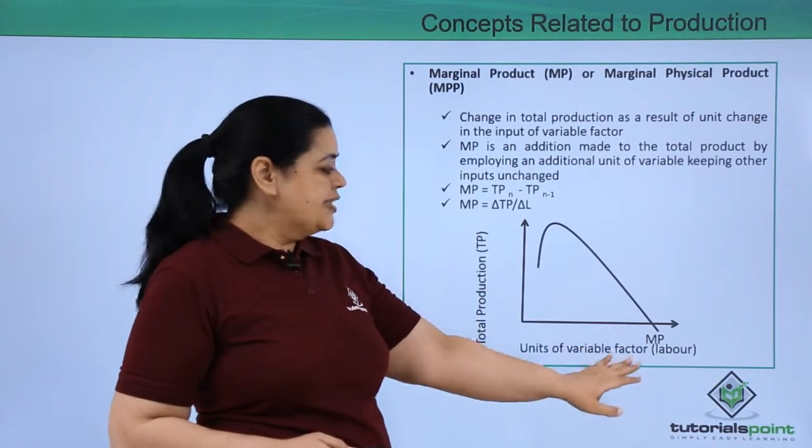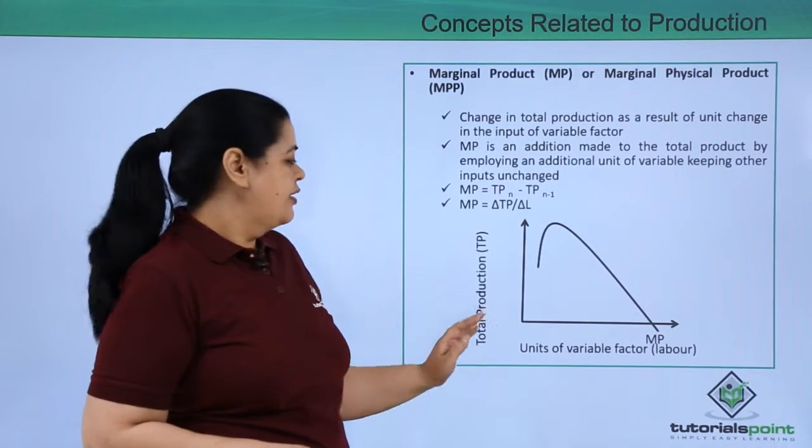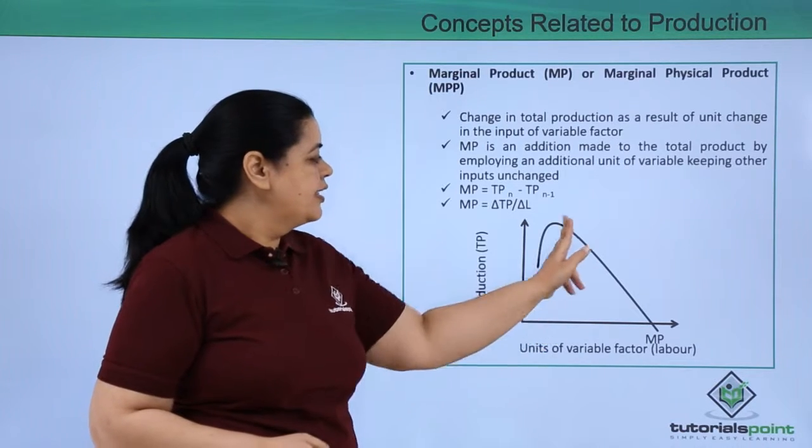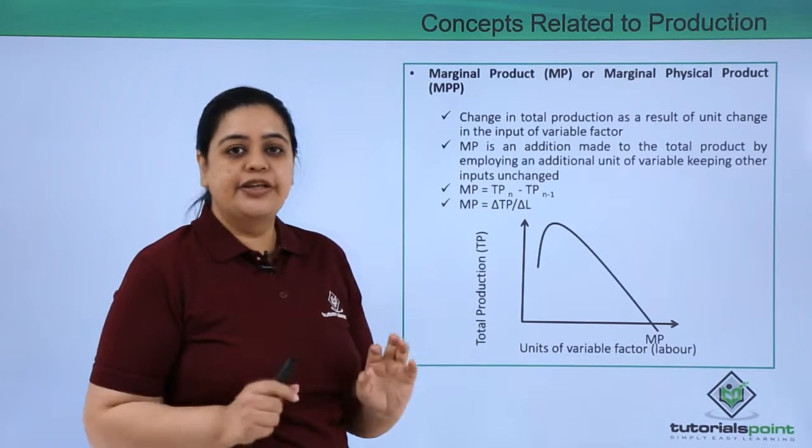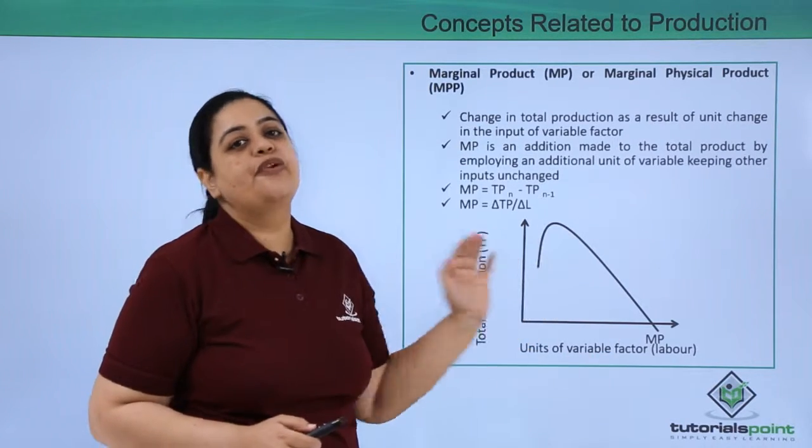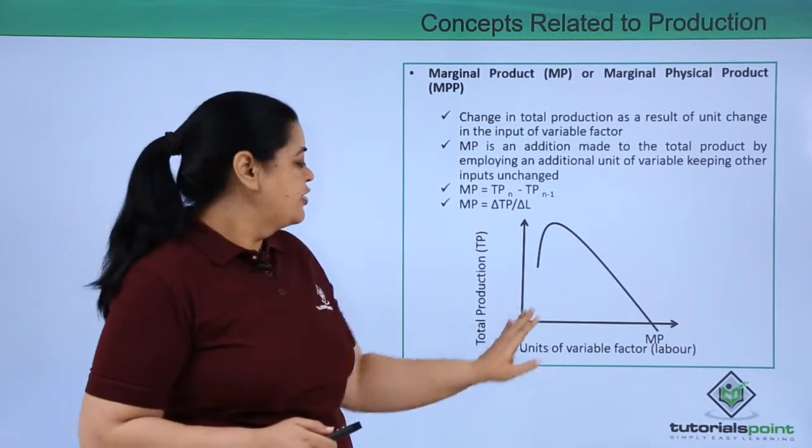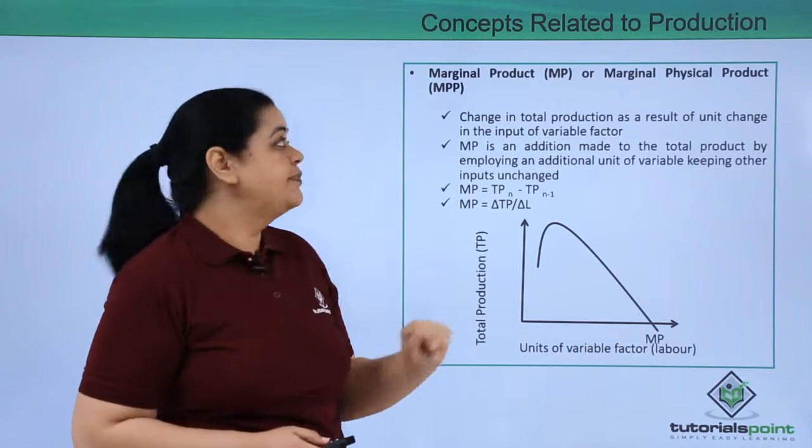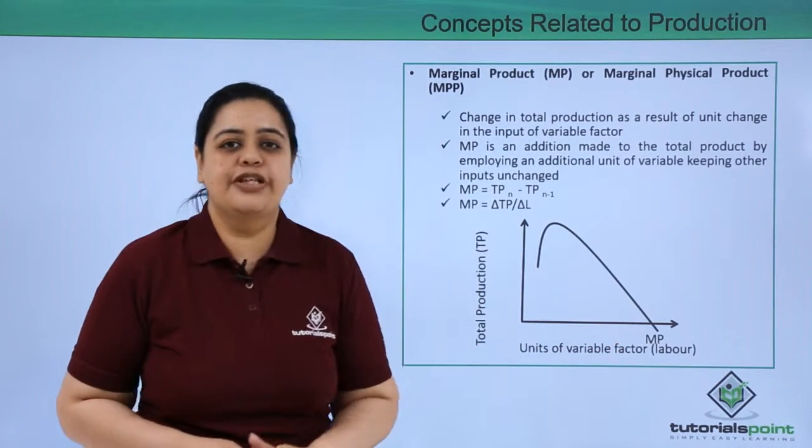Now here you can see how the graph is presented. It would be in an inverted U, but then it would not form a proper U. It would be more of a hump shape. So this is how the marginal product curve will look like.